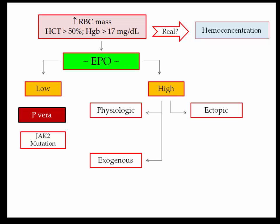If the EPO level is elevated, you have one of three conditions: an appropriate physiologic elevation, ectopic production, or exogenous administration. Physiologic elevation could come from any condition causing chronic hypoxemia — lung disease, heart disease, hypoventilation, or high altitude. Any condition where your oxygen content is chronically decreased can result in increased erythropoietin production and physiologic erythrocytosis.